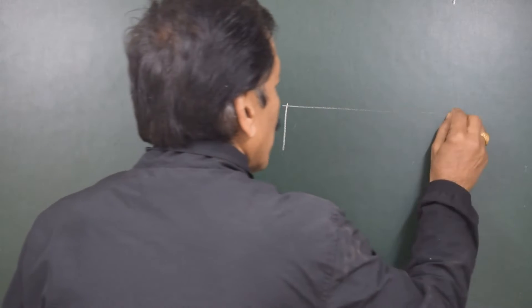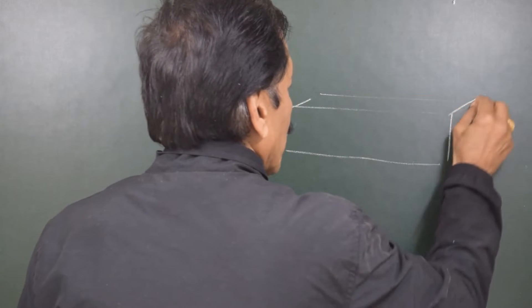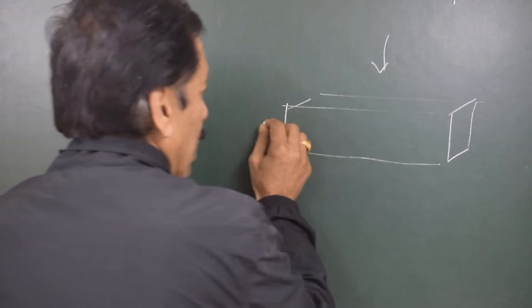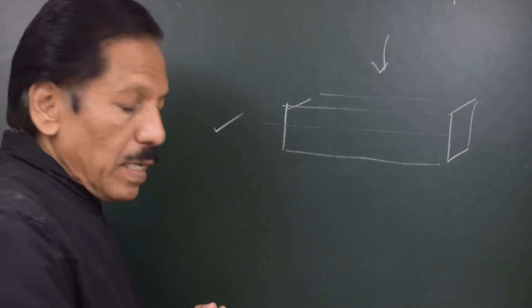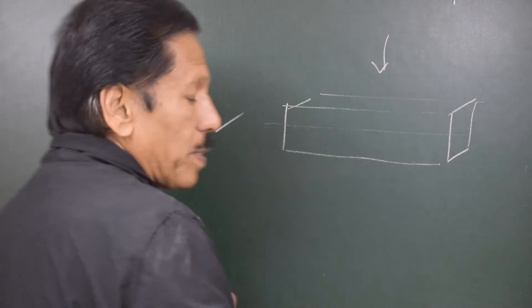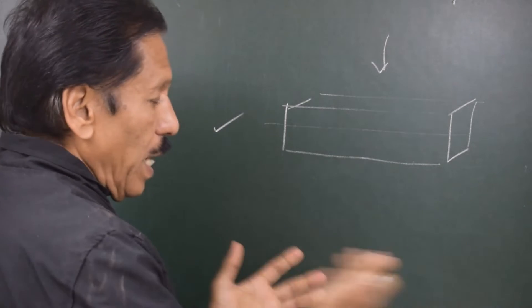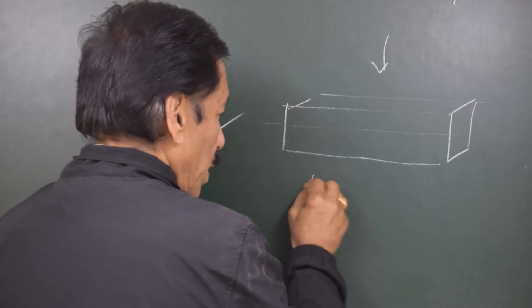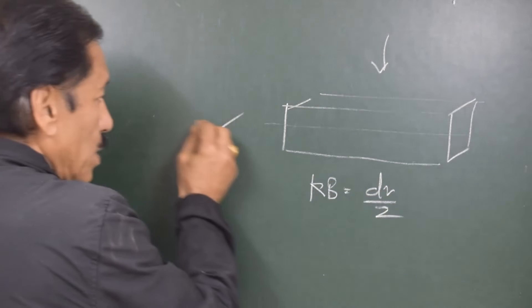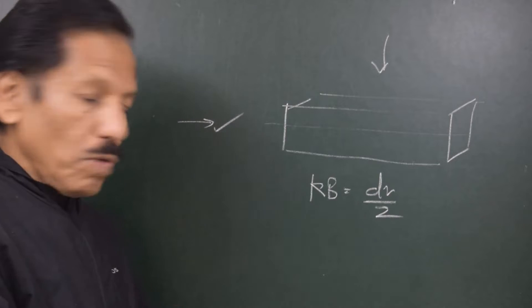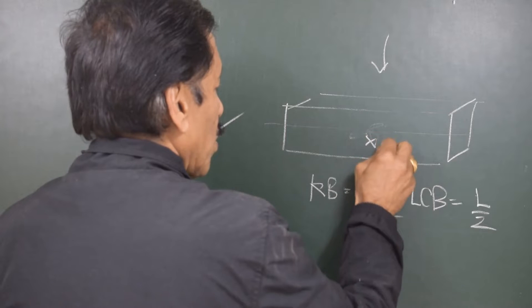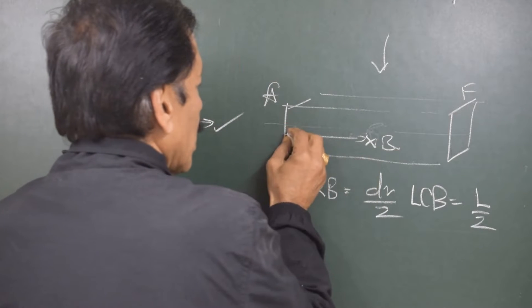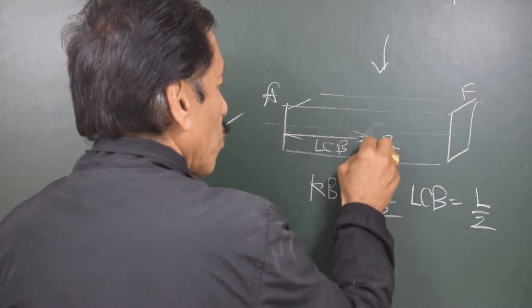Let us talk about the box vessel. The box vessel, if seen from the top, appears uniform at all water levels, and if seen from forward or aft, the transverse underwater area is the same from forward to aft. So the water plane area is constant at all drafts, meaning KB equals draft divided by 2, and LCB equals L divided by 2. This vertical distance is called KB and this longitudinal distance is called LCB.